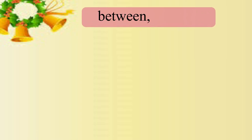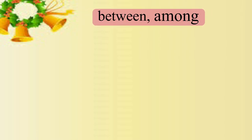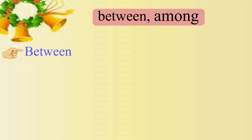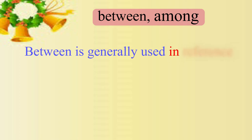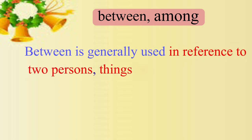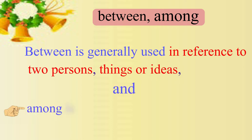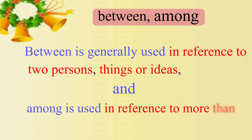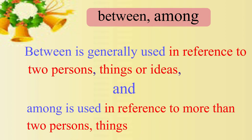The next set of words is between and among. They are very simple words but mostly incorrectly used. The word between is generally used in reference to two persons, things or ideas. Whereas among is used in reference to more than two persons, things or ideas.